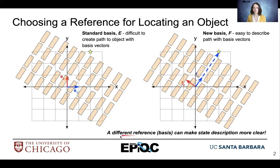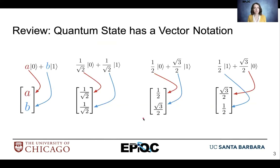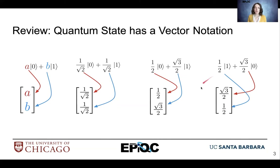If we use a different reference or basis, it can make a state description a little bit more clear, and that's going to be important for us in quantum computing. As a review, we have all these different state vectors with a vector notation associated with them. If we have alpha and beta — a and b — associated with ket0 and ket1, we have the corresponding column vector.